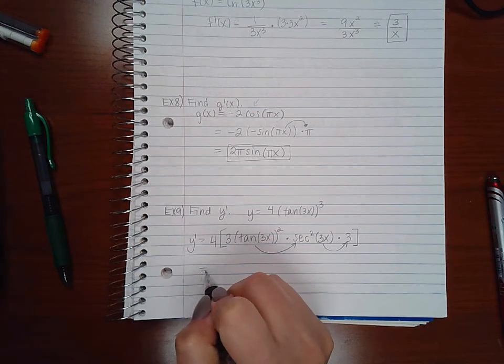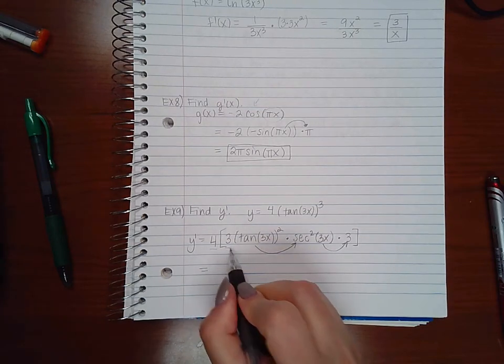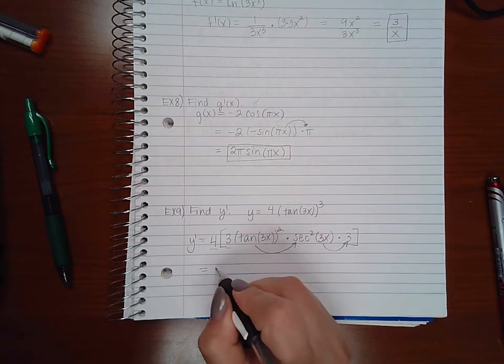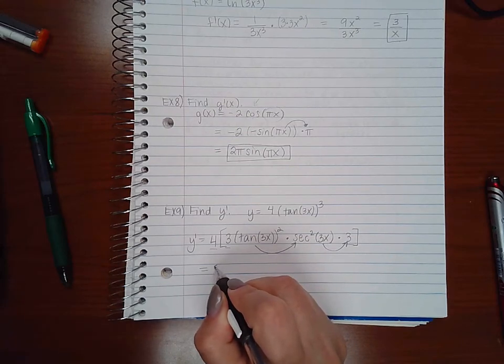So if I multiply this all out, I have 4 times 3 times 3, which is 36. And then I have tangent squared of 3x times secant squared of 3x.